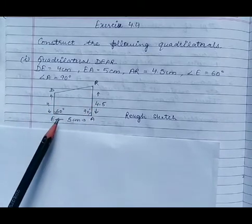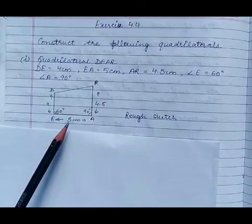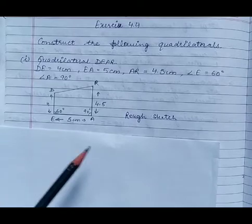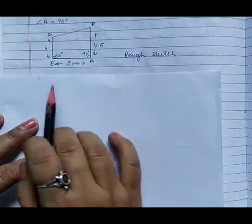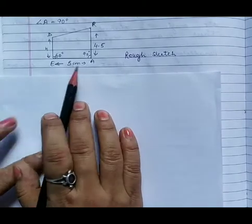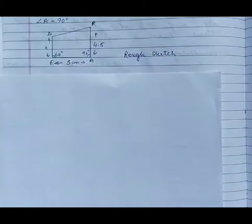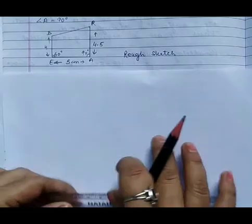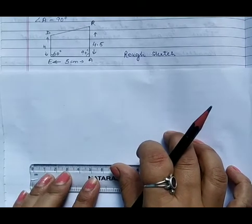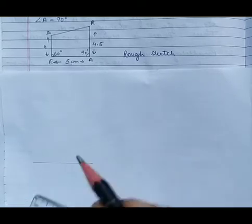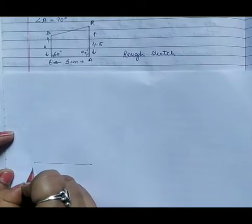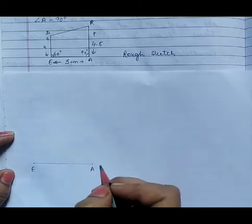So here is the rough sketch which I have drawn. According to this I will construct the fair diagram. Now first of all I will construct line segment EA of 5 cm. This point is E, this point is A.